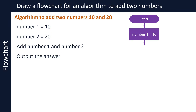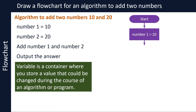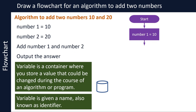We draw the next symbol to denote the process, where we are assigning the value 10 to number 1, using the assignment operator equals. In computer terminology, number 1 is called a variable. As the name suggests, a variable is something that does not have a fixed value — it is a container where you can store a value which could be changed during the course of the algorithm or program. A variable is given a name, also known as an identifier, so that we can reference it. Here we are storing value 10 in a variable called number 1.